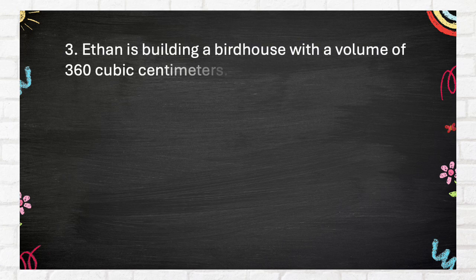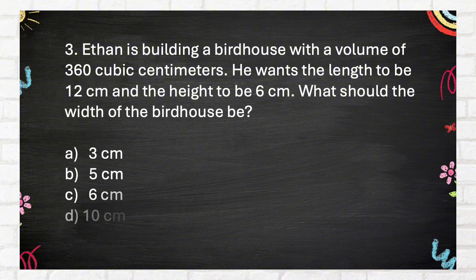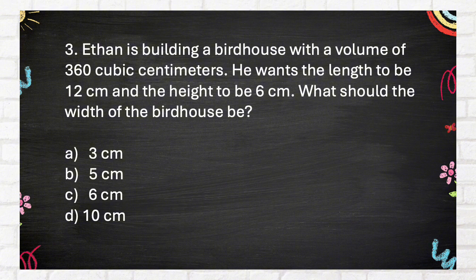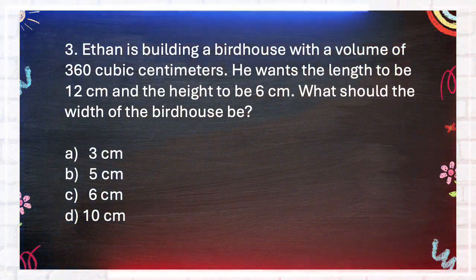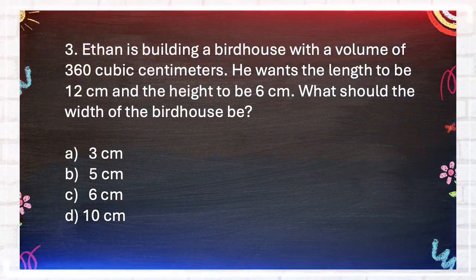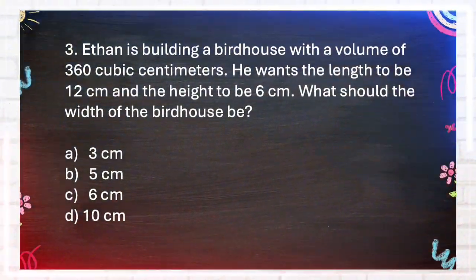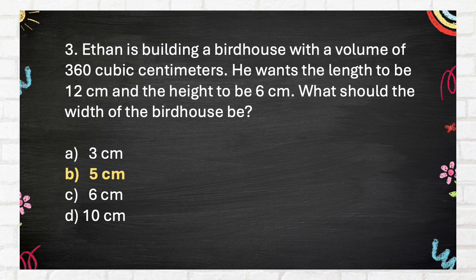Number 3. Ethan is building a birdhouse with a volume of 360 cubic centimeters. He wants the length to be 12 centimeters and the height to be 6 centimeters. What should the width of the birdhouse be? A. 3 centimeters. B. 5 centimeters. C. 6 centimeters. D. 10 centimeters. The correct answer is B, 5 centimeters.